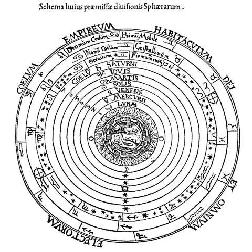The celestial spheres, or celestial orbs, were the fundamental entities of the cosmological models developed by Plato, Eudoxus, Aristotle, Ptolemy, Copernicus, and others. In these celestial models, the apparent motions of the fixed stars and planets are accounted for by treating them as embedded in rotating spheres made of an ethereal, transparent fifth element.